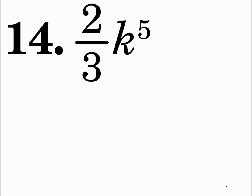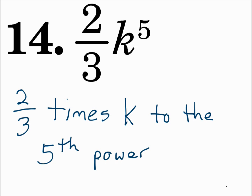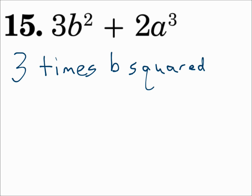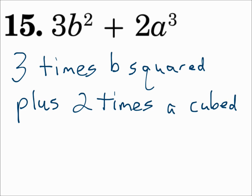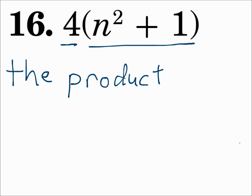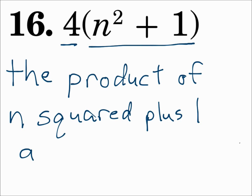Number 14: two thirds times k to the 5th power. You can say it just like that. Number 15: 3b squared plus 2a cubed. You can write it almost exactly like that: '3 times b squared plus 2 times a cubed.' Number 16: 4 times the quantity n squared plus 1. Notice you have two chunks being multiplied with parentheses, so you need to be careful in your phrasing. Since the two pieces are being multiplied, say the product of n squared plus 1 and 4.